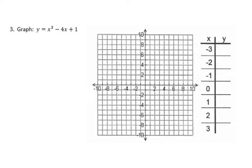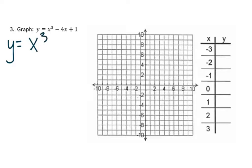Now we're moving on to a cubic. The reason it's called a cubic is because cubes are in the third dimension, and we have a power of 3 here. No matter what graph you have, as long as you can use the order of operations, you just plug it in and see what your answer is. In this equation, we have an x that we're going to cube, and an x that we're going to multiply by 4 — so this one starts to be a longer process.